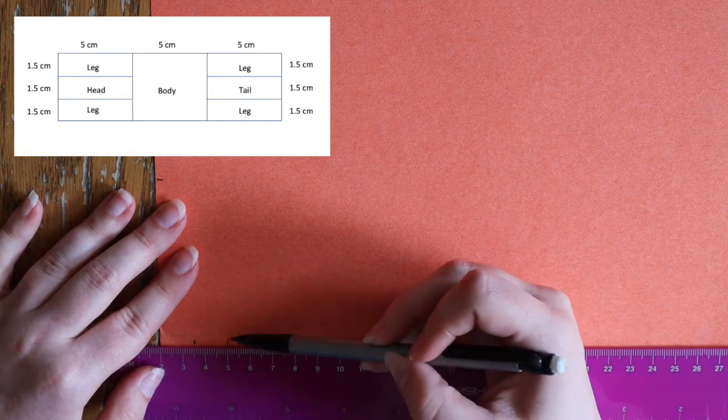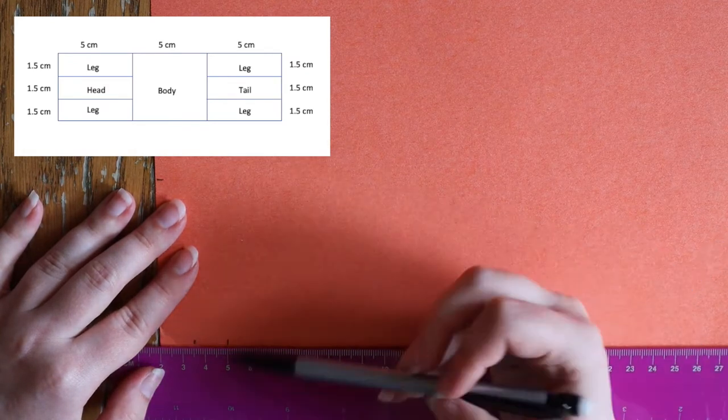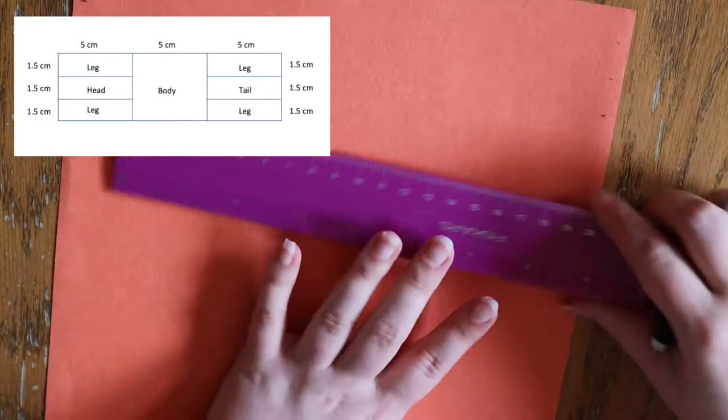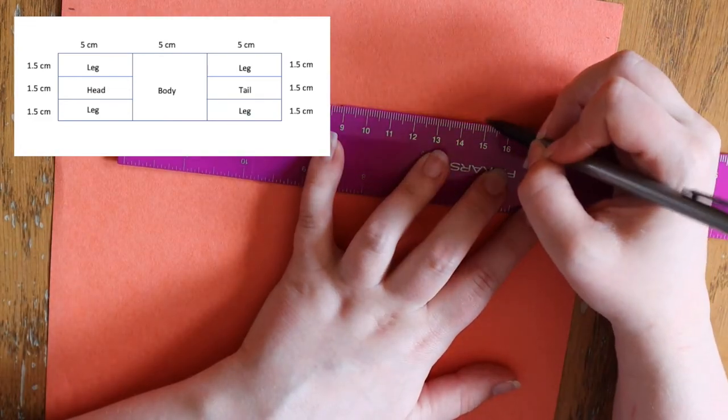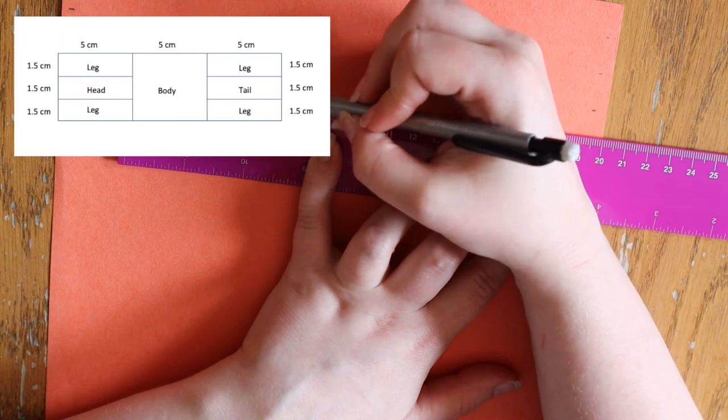In terms of height, you'll want to divide the two outer boxes that are 5 cm long into three additional sections that run horizontally. Each of these should be 1.5 cm.